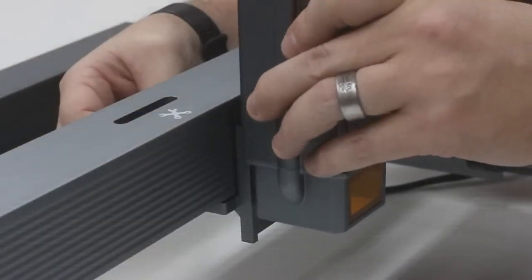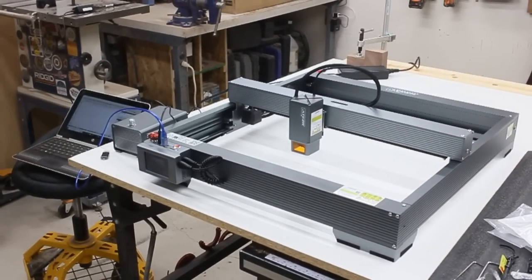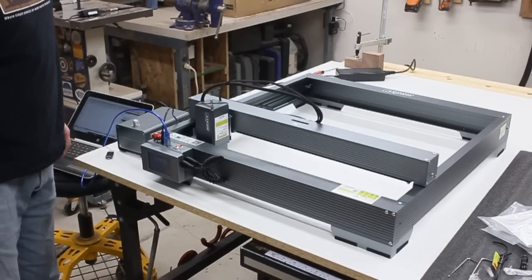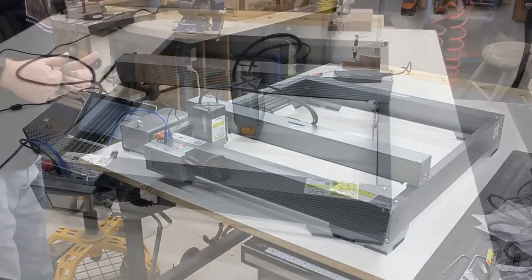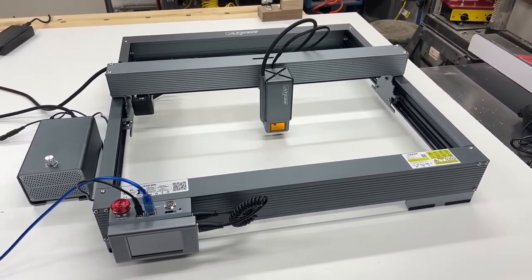Next, I can put on the laser module itself and get that wired up. Lastly, I pull off the film, and I fired the thing up. Once it was connected to my laptop, I could home the machine, and I was good to go. All in all, the assembly went very smoothly. It only took me 30 minutes, and I had the whole thing together.